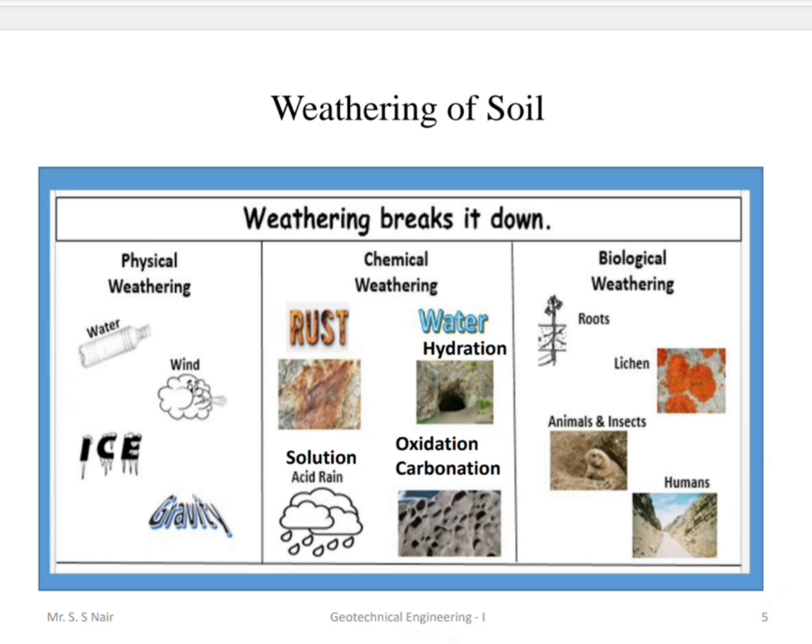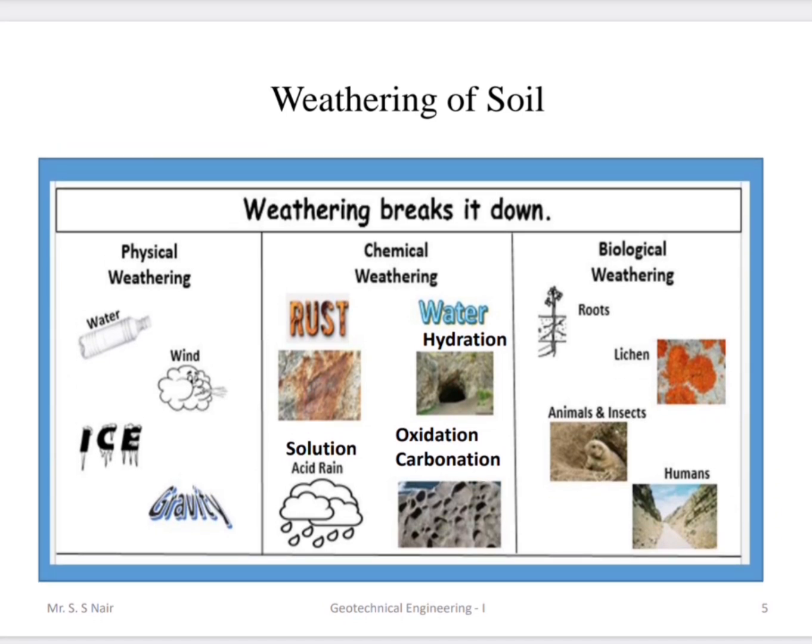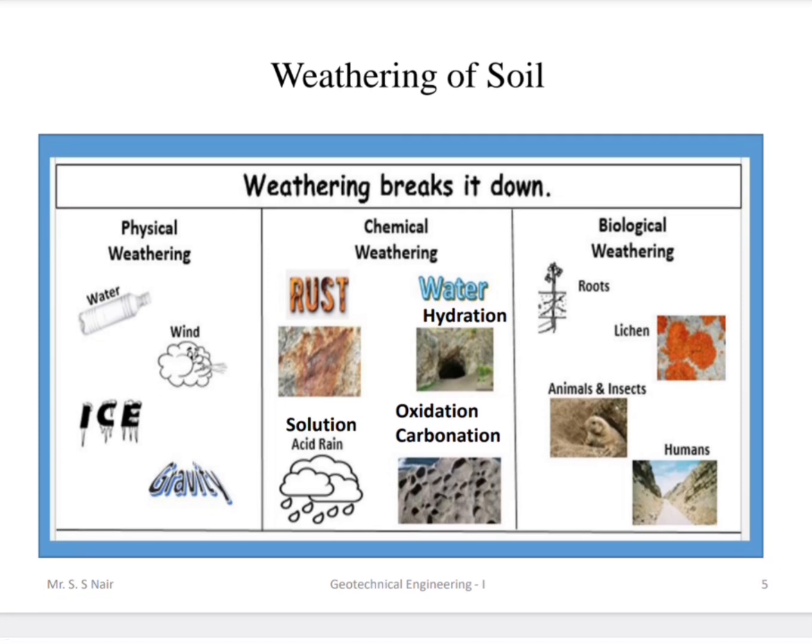Weathering is generally a breakdown process by physical, chemical, or biological means. Physical means include water, wind, ice, or gravity. Chemical means involve water, carbon dioxide, or even sulfur from acid rain. Biological weathering may be caused by roots, animals, insects, or human activities. These are all types of weathering responsible for the formation of soil.